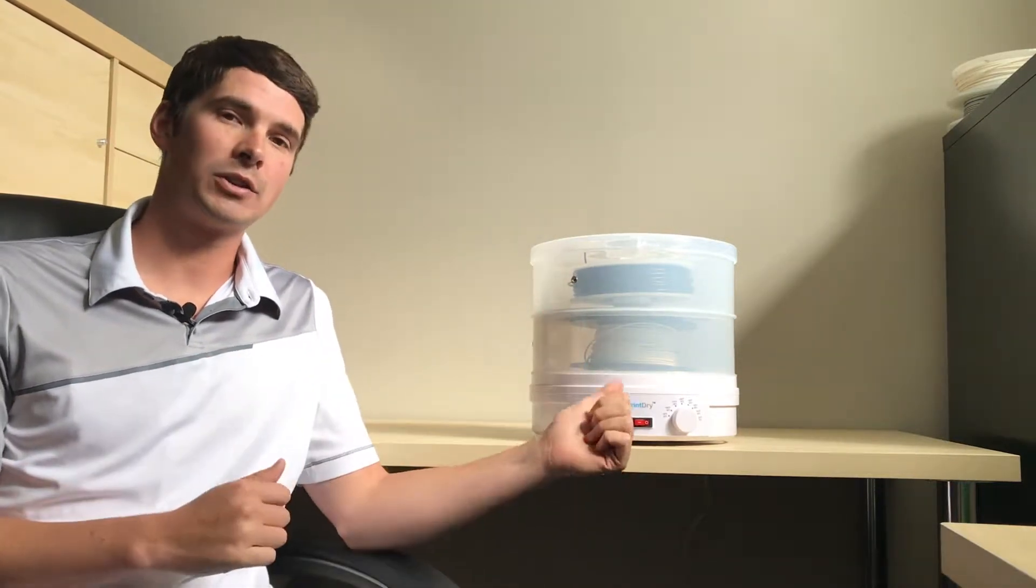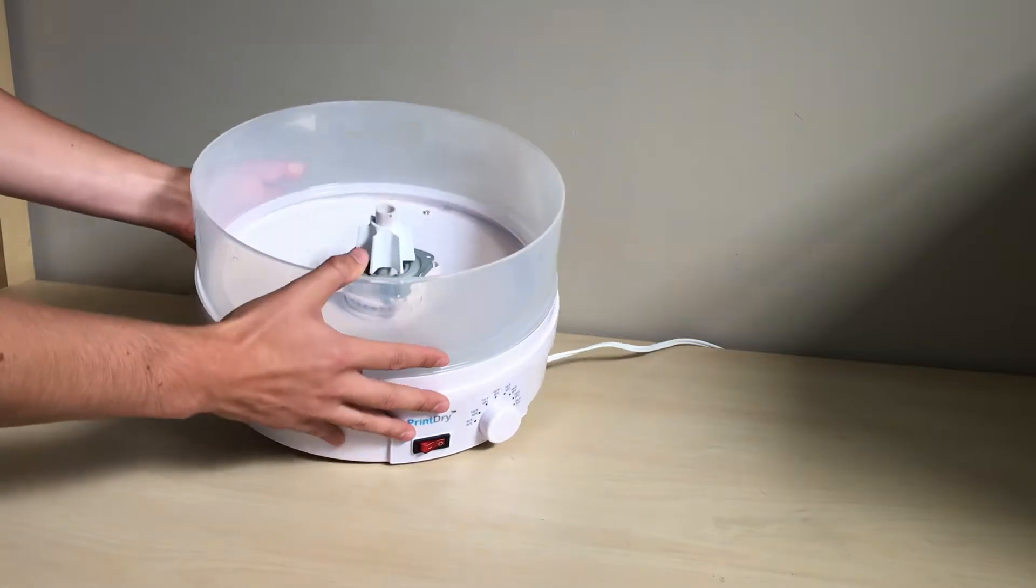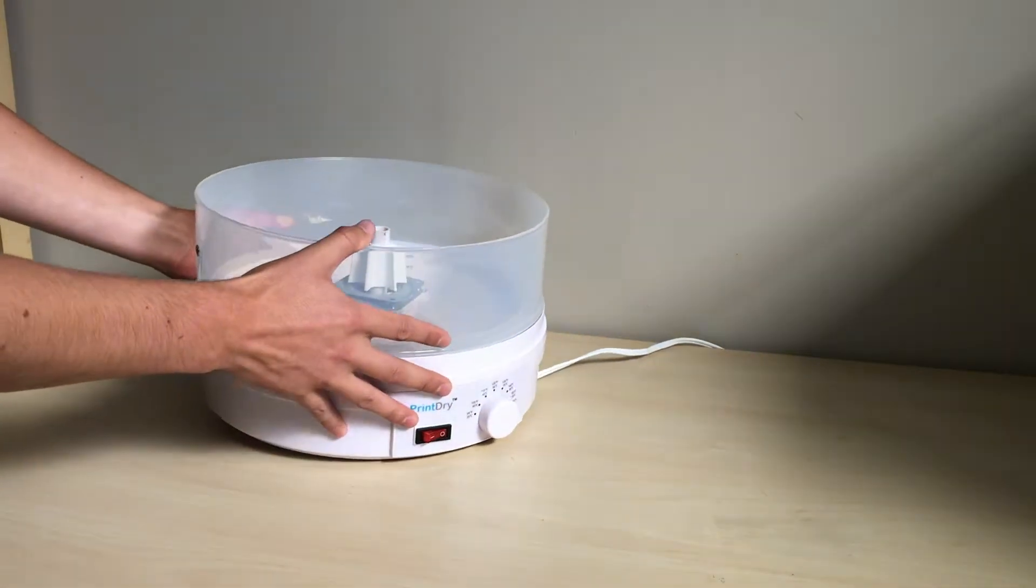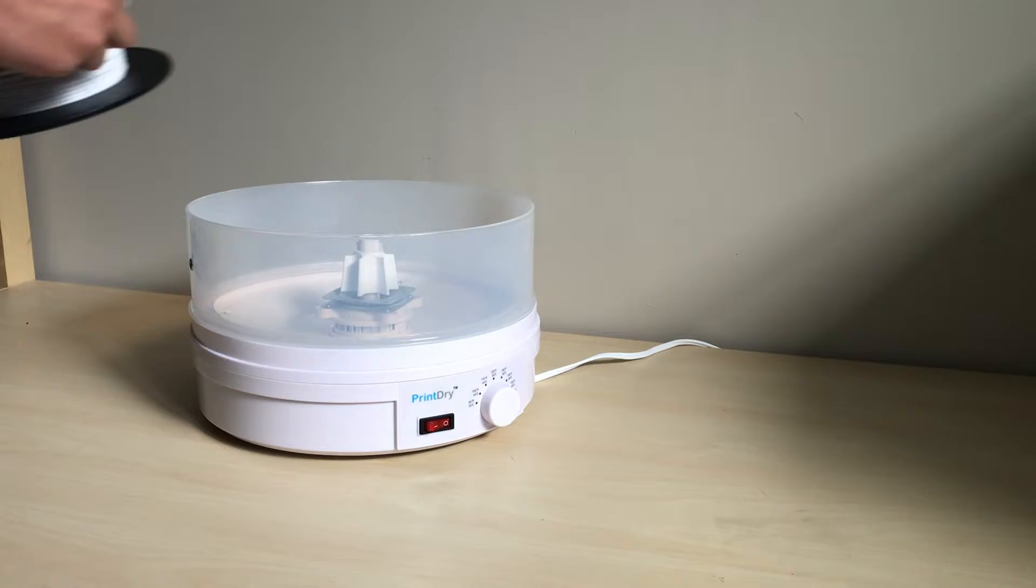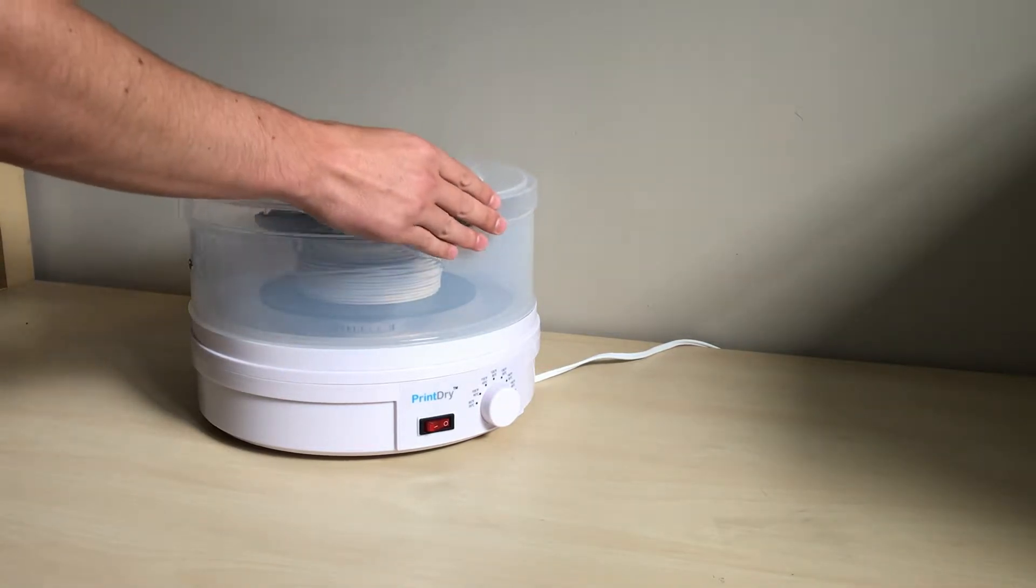Let's jump into how to actually use it. The system is very easy to use. All you have to do is load your spool onto the mount on the inside of the machine, just like this, and then make sure that you have the lid on top.